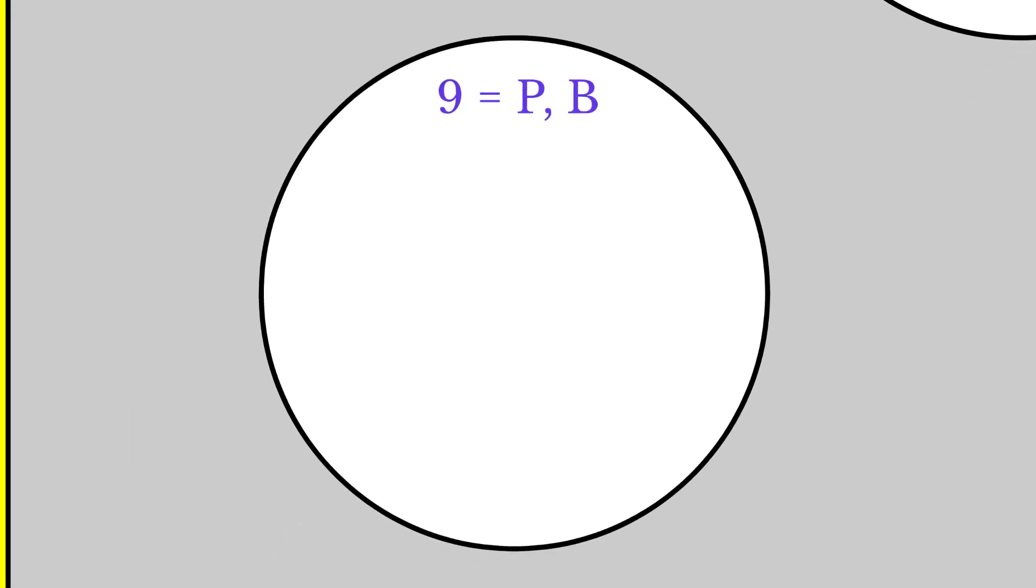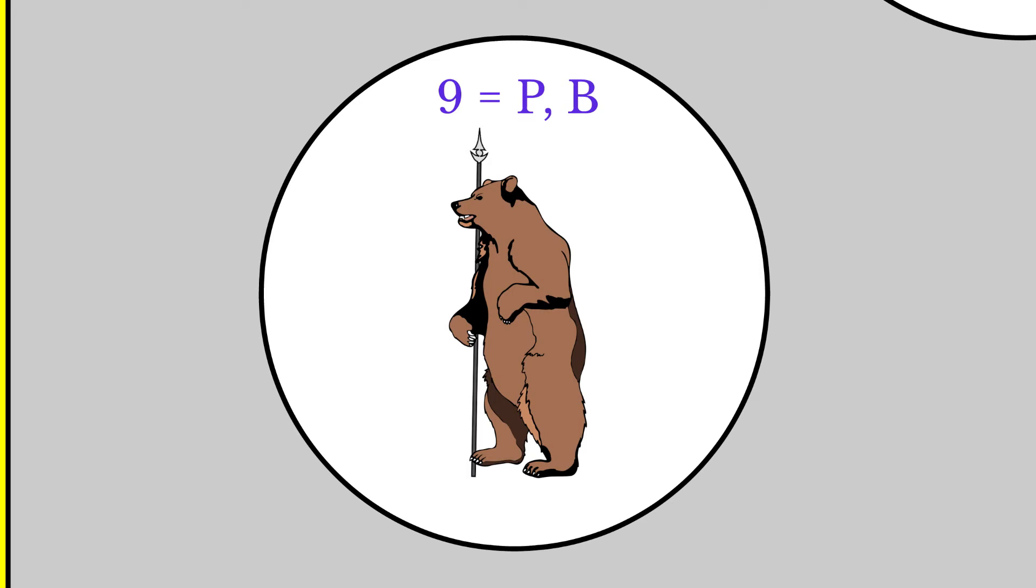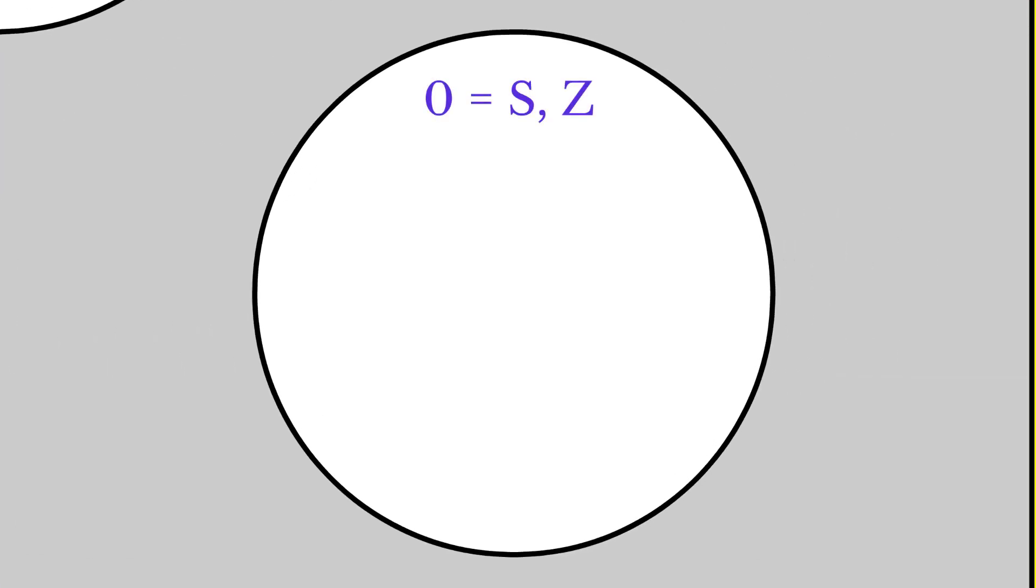Number nine is replaced by bilabial plosives, p and b. We have a bear with a pike. And the digit zero is replaced by alveolar sibilant fricatives, s and z. We have a snake and a zebra.